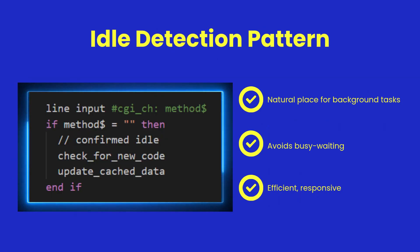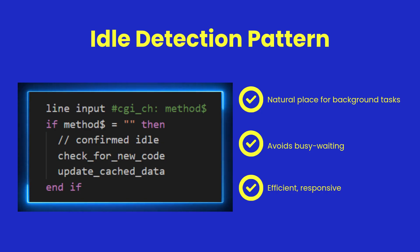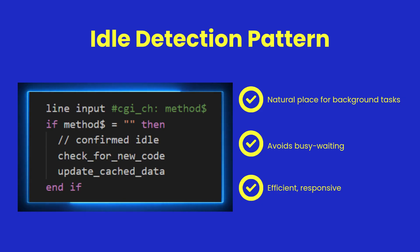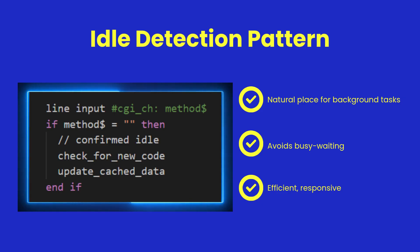ShearPower's polling loop provides confirmed idle detection. If no request is waiting, you can safely perform quick background tasks like refreshing caches or checking for new code. This avoids complex schedulers while keeping handlers responsive.